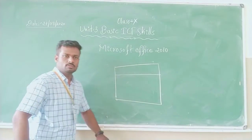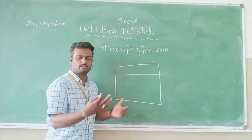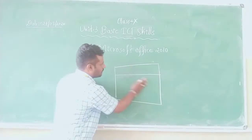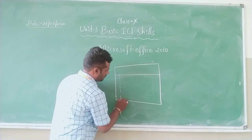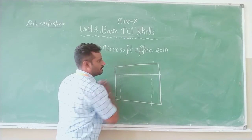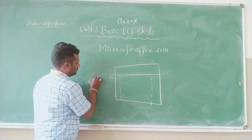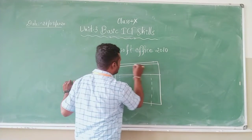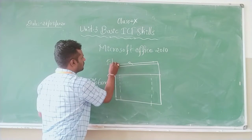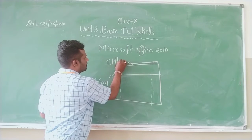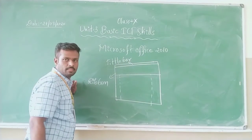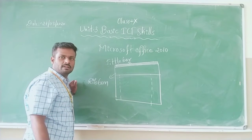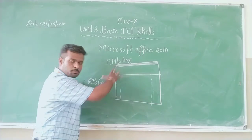Imagine this is a page. Whenever you open Microsoft Word you will get an interface like this. This area is called the ribbon. Above the ribbon we have the title bar. The name itself says title bar — whenever you save this particular document with a name, that name appears in the title bar.